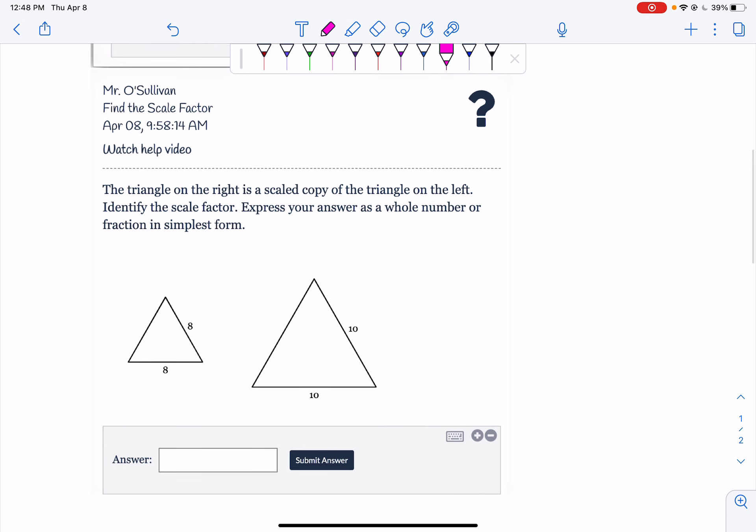Now, if you go to the next part, it says the triangle on the right is the scaled copy of the triangle on the left. Identify the scale factor. Express your answer as a whole number. So basically like number 1, 2, 3, 4, 5, or a fraction in simplest form.